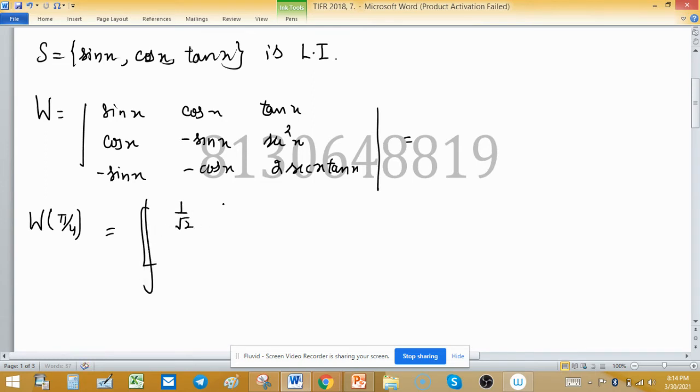At π/4: sin is 1 upon root 2, cos is 1 upon root 2, tan is 1. First derivatives: 1 upon root 2, minus 1 upon root 2, and 2. Second derivatives: minus 1 upon root 2, minus 1 upon root 2, and 2 root 2.